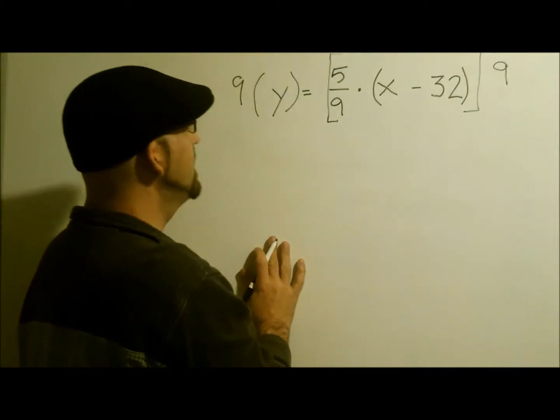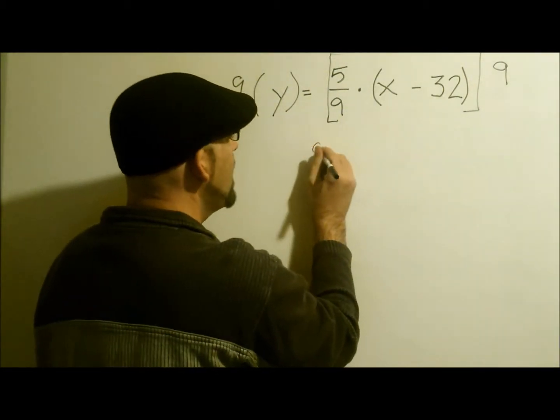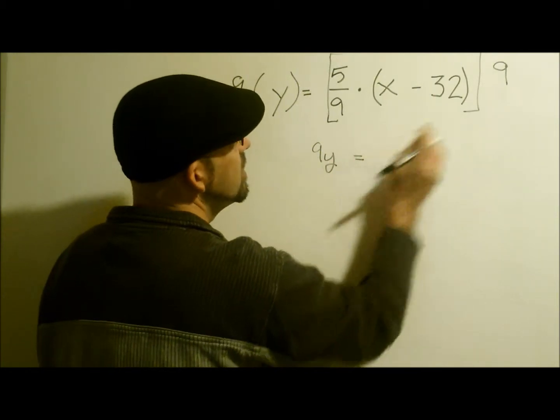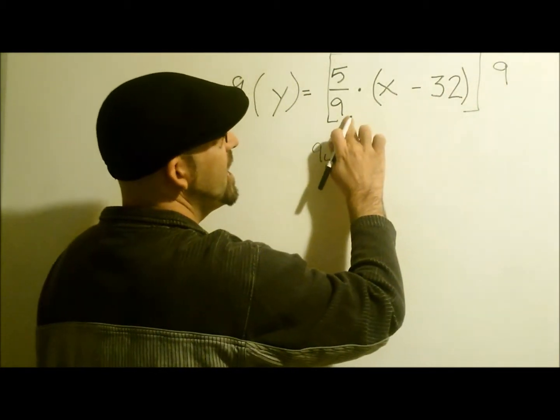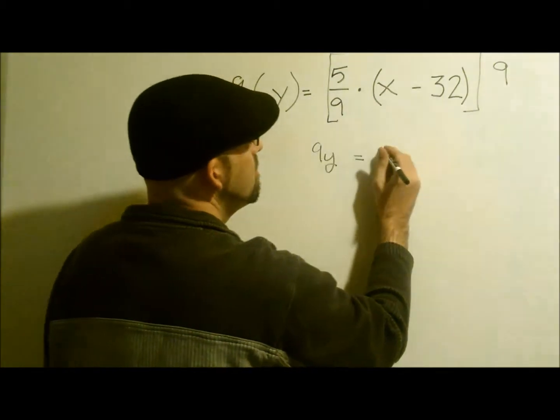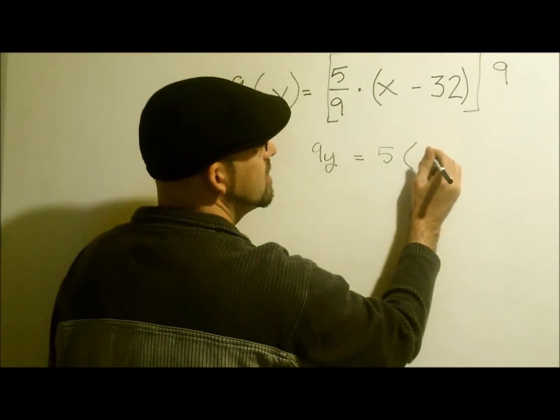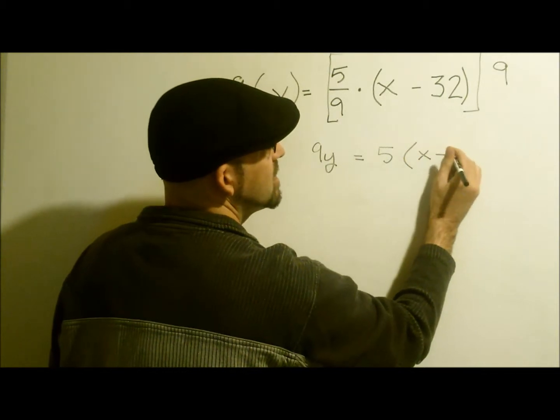I end up with 9y equals, and the 9 cancel out, 5 times x minus 32.